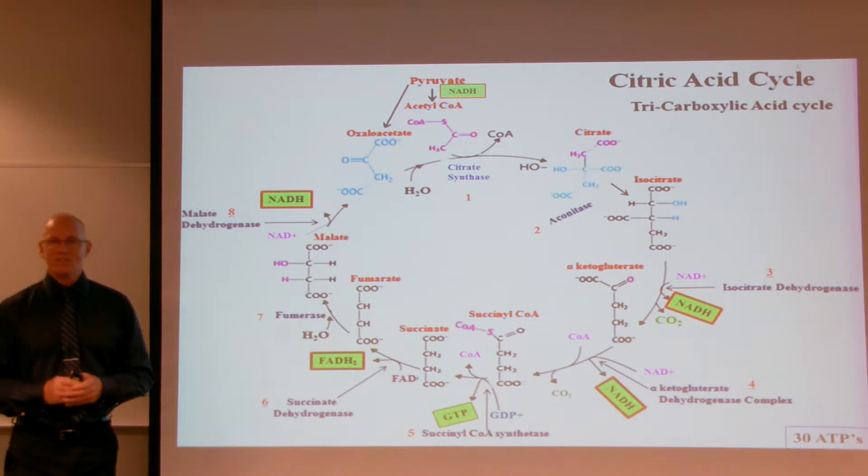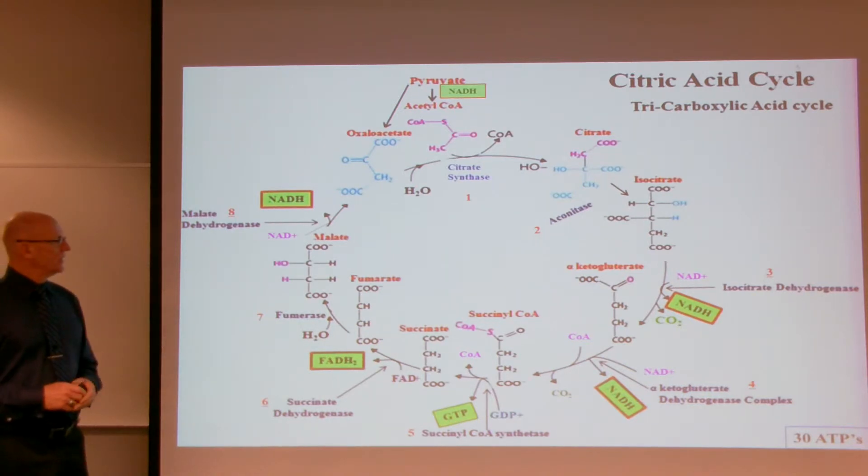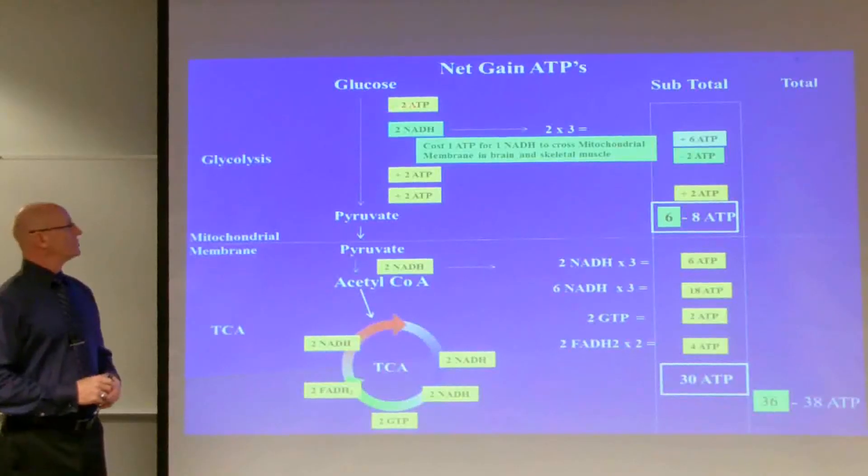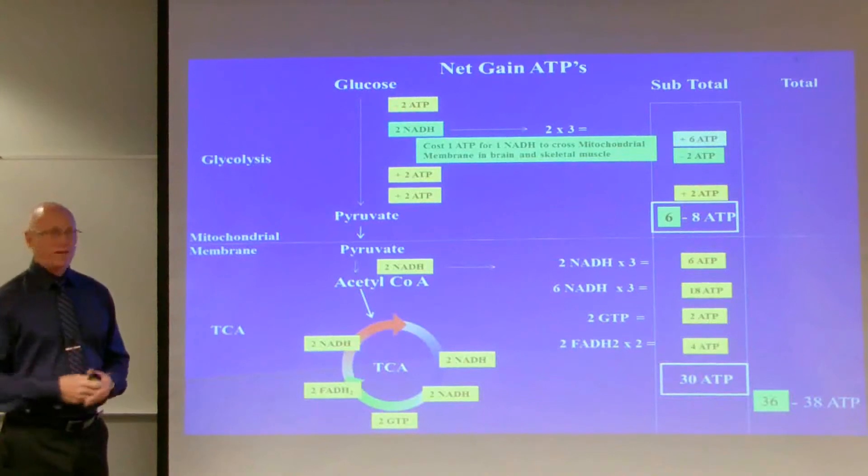Now the whole purpose of this citric acid cycle is to yield these coenzymes, or these intermediate electron carriers, that we can bring to the electron transport chain in the inner mitochondrial membrane. And the citric acid cycle will basically yield 30 ATPs. The first step in glucose took us, it cost us two ATPs.